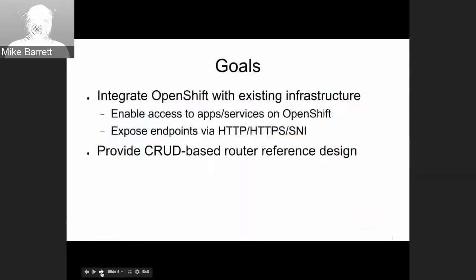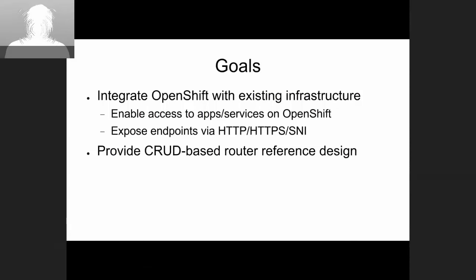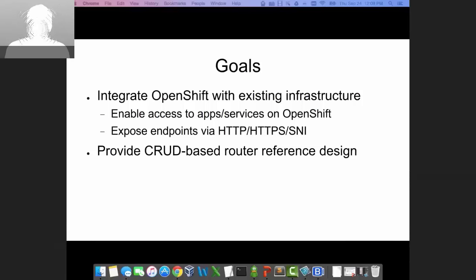Makaya is going to take us through the F5 integration solution. The primary goal was to enable integration of OpenShift with existing F5 Big IP infrastructure. Organizations have investment in F5 hardware and licenses, and we wanted to enable clients to reach web applications and services. We support unencrypted HTTP traffic, encrypted HTTP using TLS, as well as non-HTTP traffic using TLS SNI server name identification, which can be used for TLS-enabled message queues, databases, or other TLS-enabled technologies.